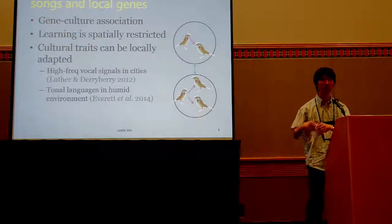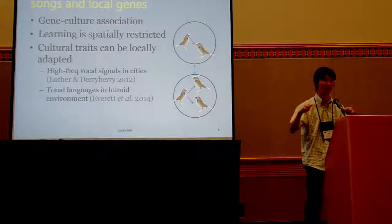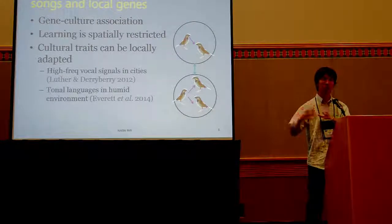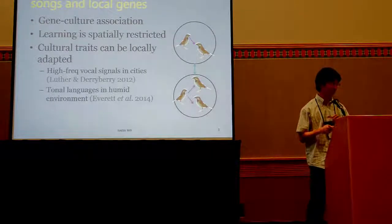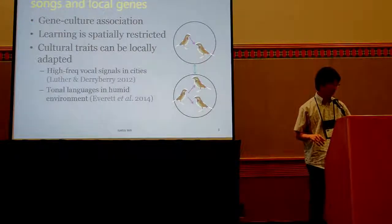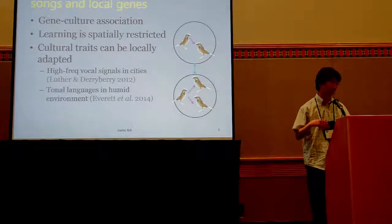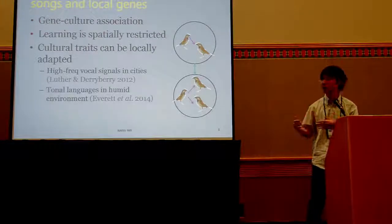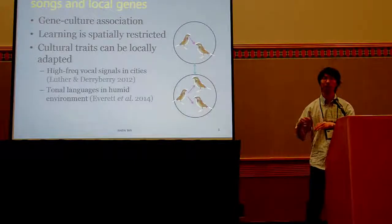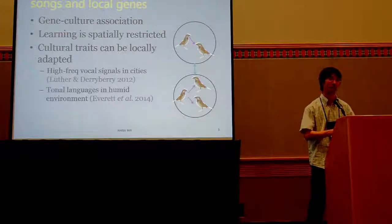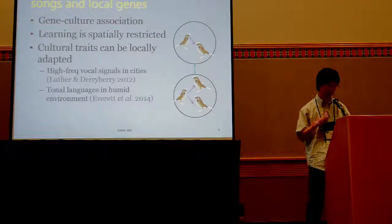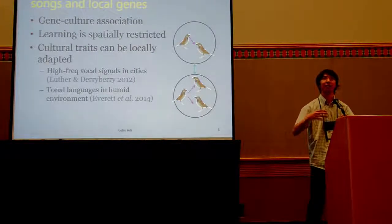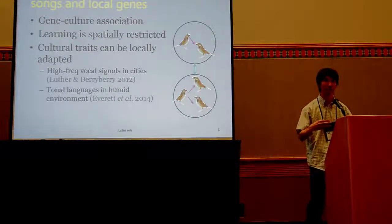First, learning is spatially constrained — you cannot learn from individuals infinitely far away, and birds don't use the internet. So there are going to be local cultural traits, which in the case of birdsong are called birdsong dialects. Another potential source of local cultural traits is local adaptation. For example, in cities with a lot of low-frequency ambient noise, evidence shows that high-frequency vocal signals are more fit for birds. In human languages, tonal languages like Vietnamese or Cantonese are more likely to develop in humid environments due to physiological constraints on the larynx. When there are local cultural traits, they become statistically associated with local genes, and that association can potentially allow selection on cultural traits to affect the genes.